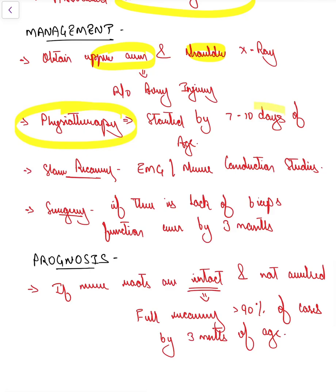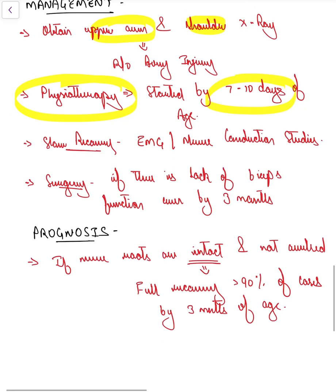Physiotherapy to prevent contractures should be started as early as 7 to 10 days of life. If there is low recovery, we'll have to do an EMG electromyography or nerve conduction study to see whether it is an avulsion injury or a stretch injury. Stretch injuries are expected to improve, but if there is avulsion injury, we'll have to consider surgery.